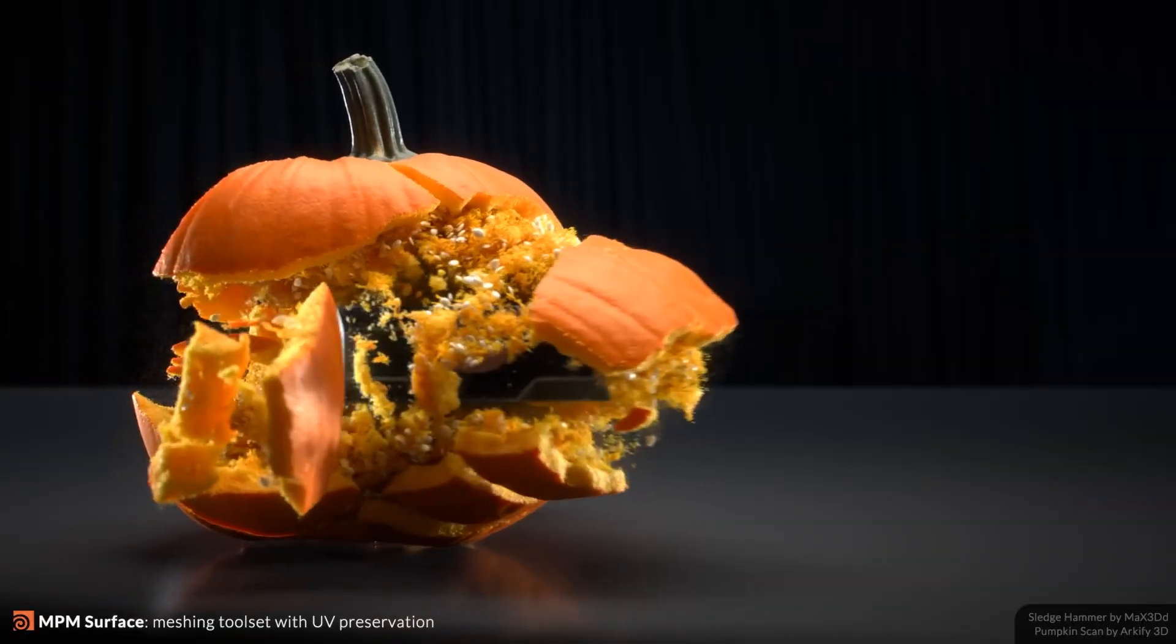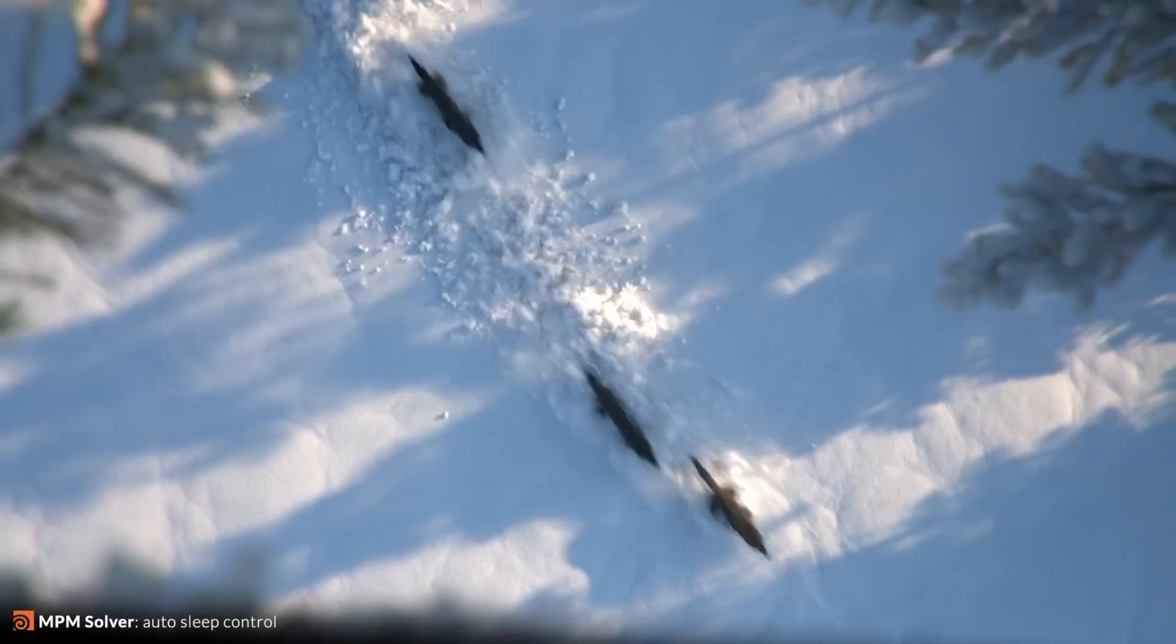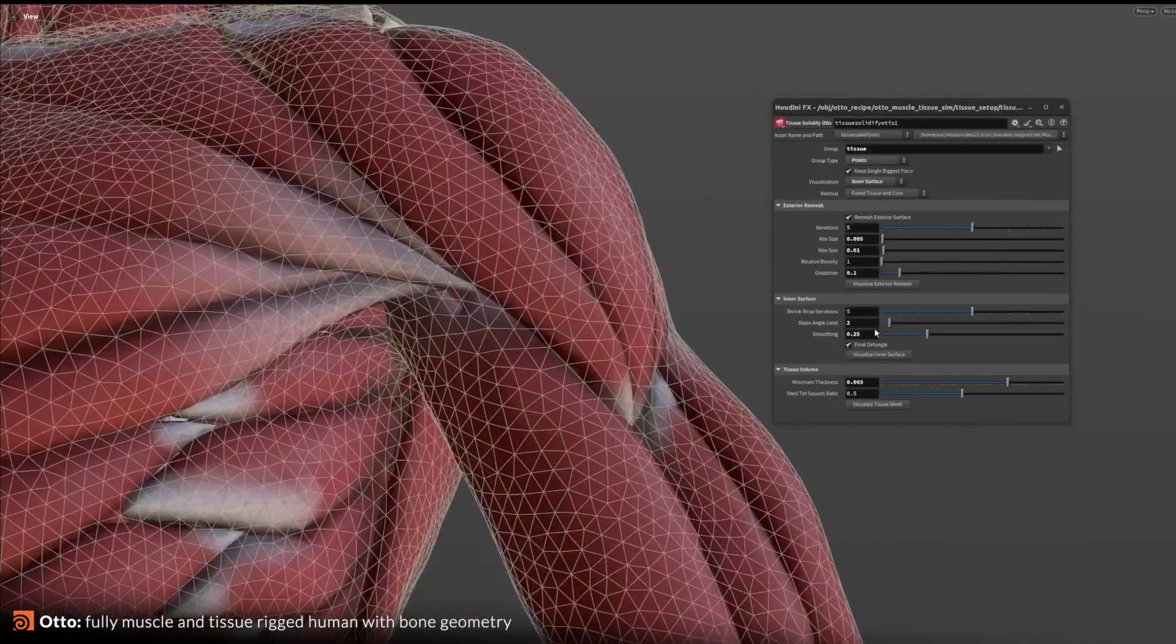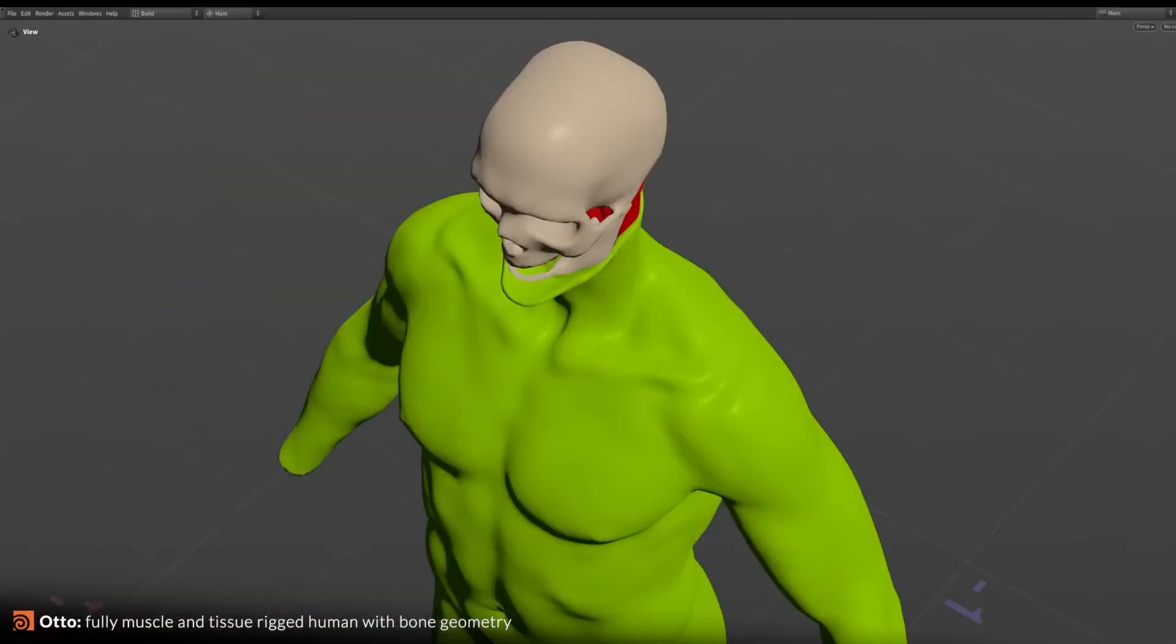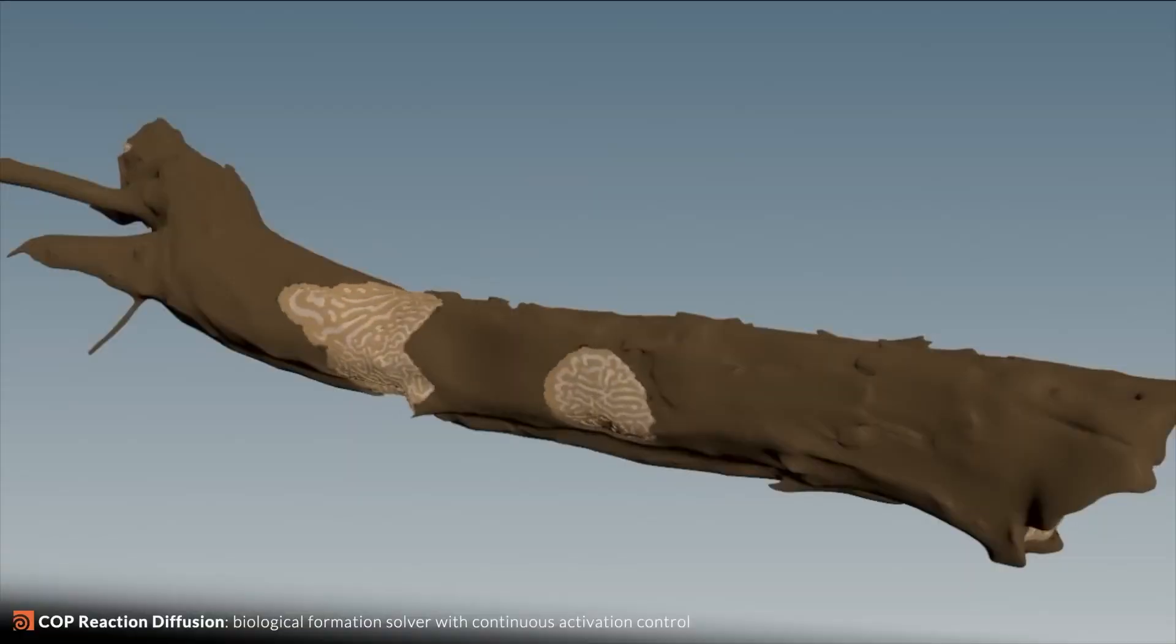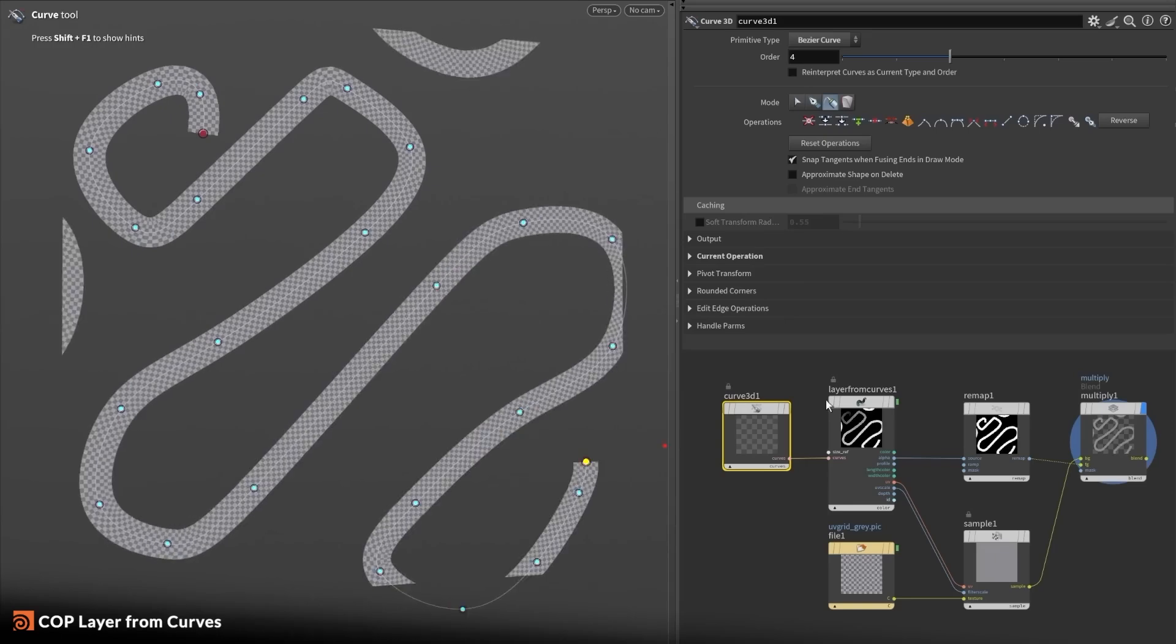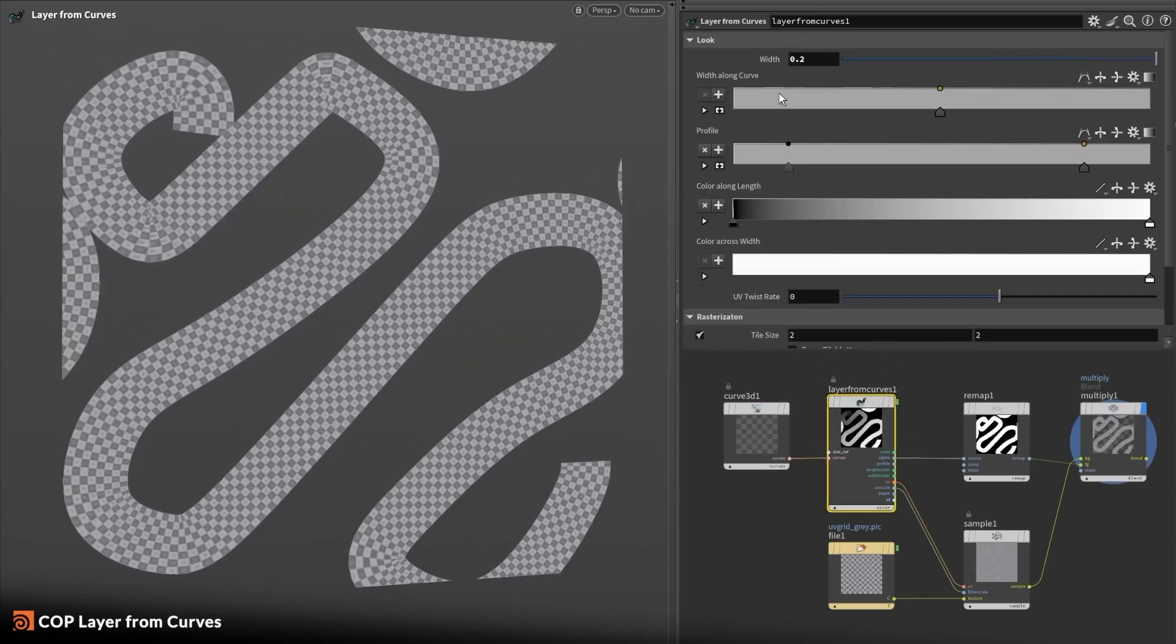Houdini 21 also brings refinements to modeling and environment creation. As a 3D modeler, you will benefit from improved topology and UV workflows, simply because the software can now handle complex geometry edits more robustly and offers better muvdim-based UV layout management and intuitive selection and painting tools for sculpting and geometry.